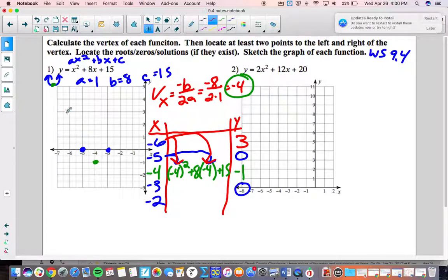So negative 6, 3 is a point on this parabola and guess what, when you plug negative 2 in place of that you'll also get 3 because parabolas are symmetrical through the vertex. In other words this point can get reflected over here. So there is our parabola.